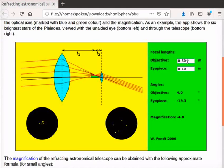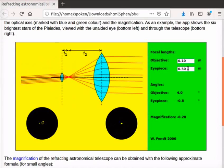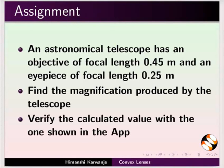Now, reverse the focal lengths of the objective and eyepiece. Observe that the six brightest stars of the Pleiades appears to be a single point. This is because the focal length of the objective is smaller than that of the eyepiece. As an assignment, solve this numerical.